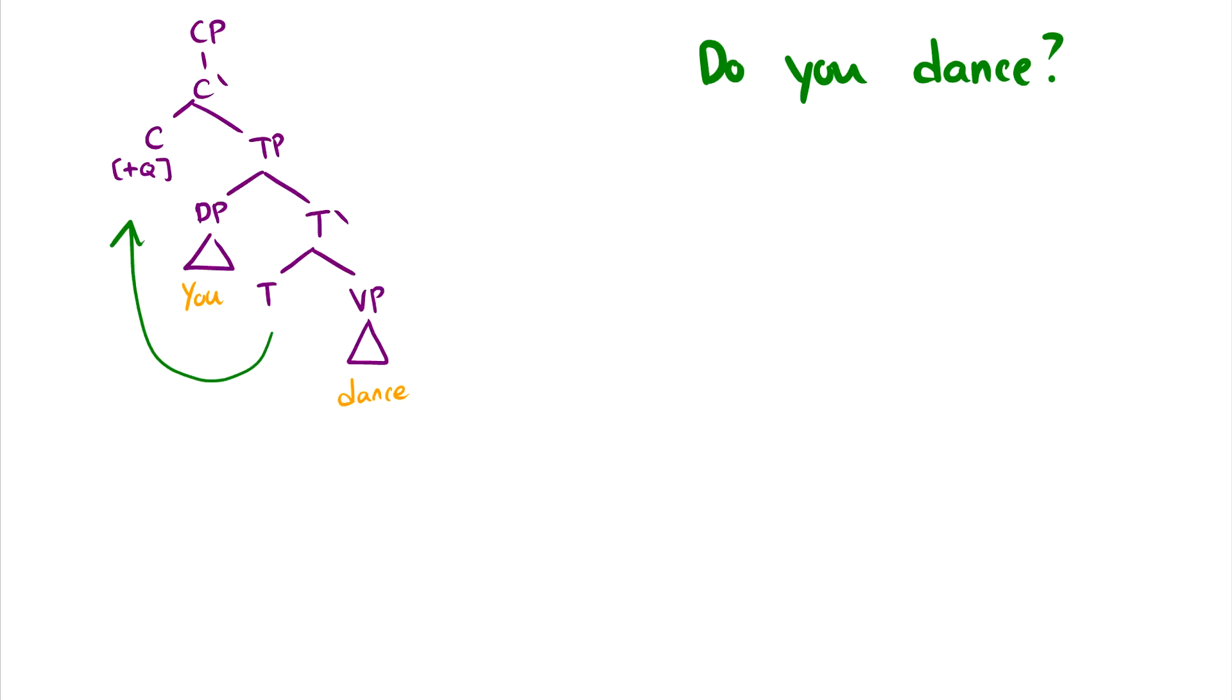Well, we need to move something up from T to C. So we insert our lovely dummy friend do under T, and then it undergoes movement. And then we end up with do you dance. And this is really all there is to it.